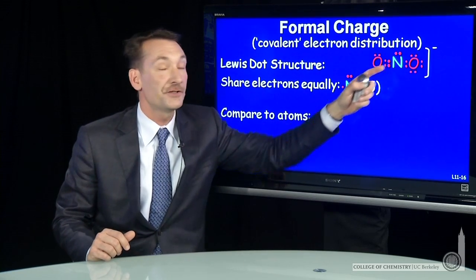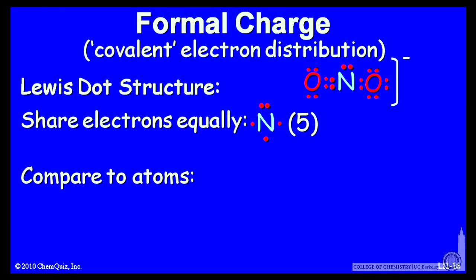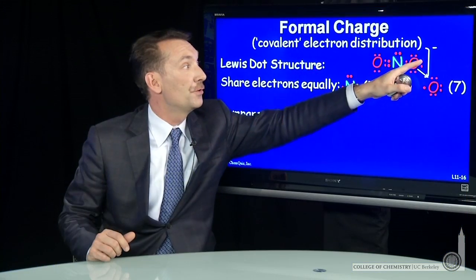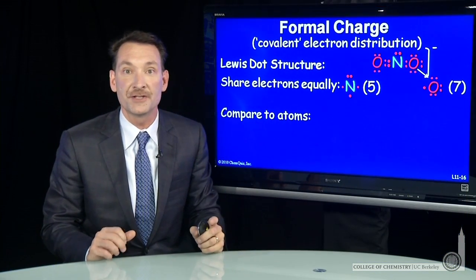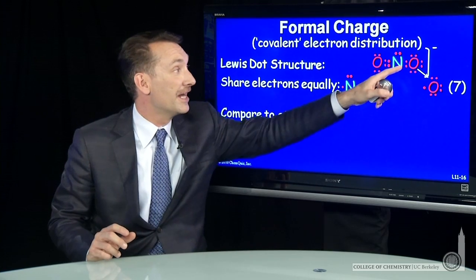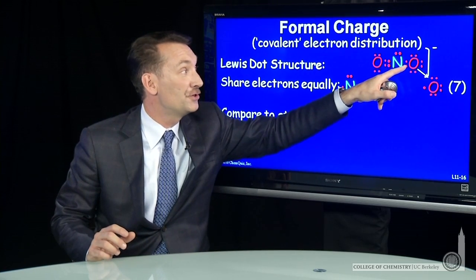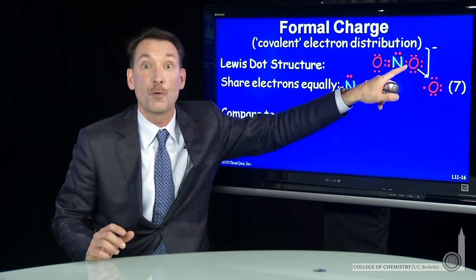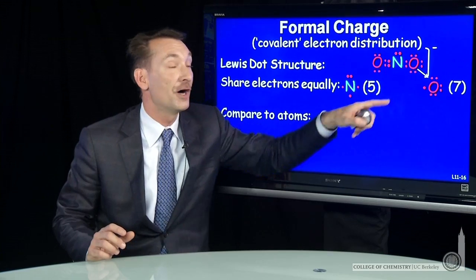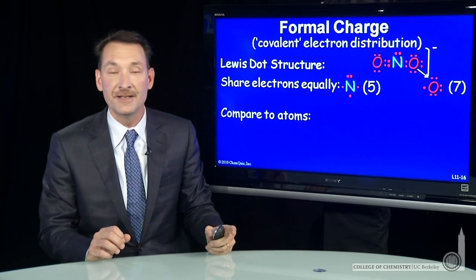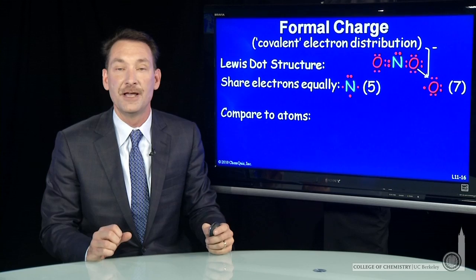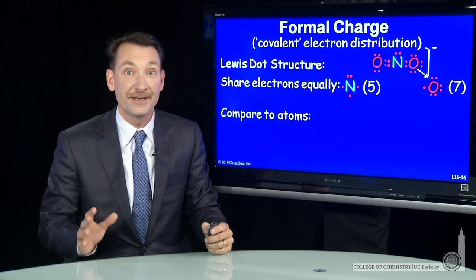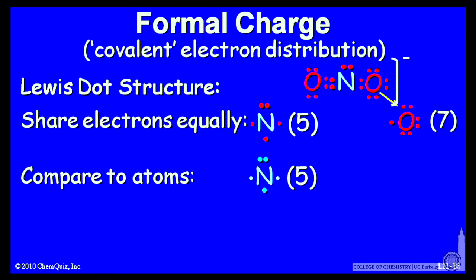What about the oxygens? We'll have to treat them separately, so we'll do this oxygen. This oxygen has one, two, three, four, five, six electrons in lone pairs that it doesn't have to share with anyone. And it has to share these two with nitrogen, so one more. Six and one is seven, so seven electrons around oxygen in this molecule.